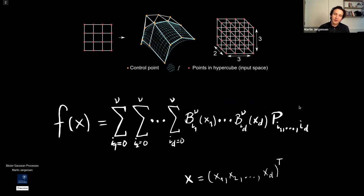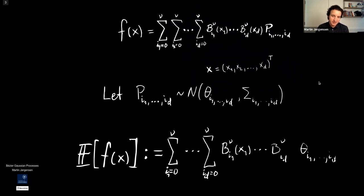Today we are only going to consider P being of dimension one. Here P was dimension three because it's easy to visualize, but if this is dimension one, we are just considering regression. A Bézier Gaussian process can then be defined if we let all the control points be Gaussian distributed with a mean theta and a variance sigma.